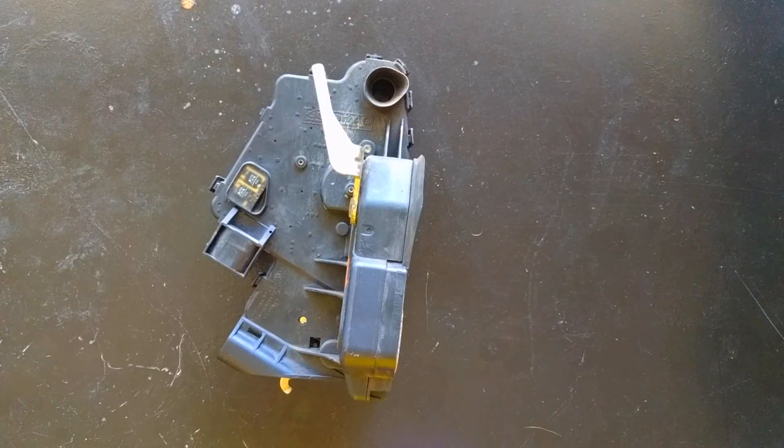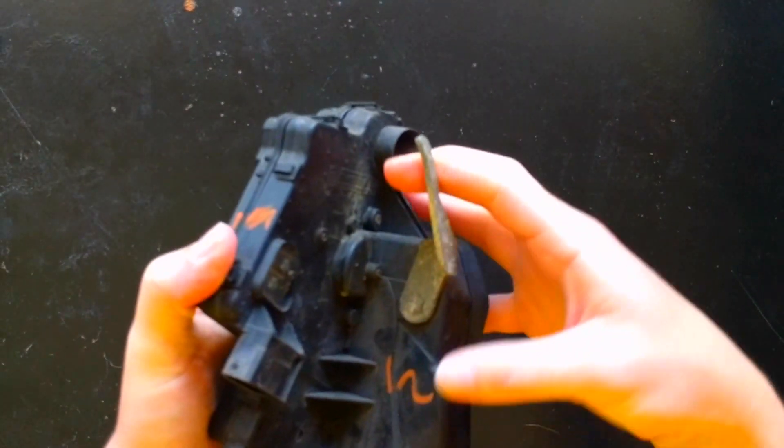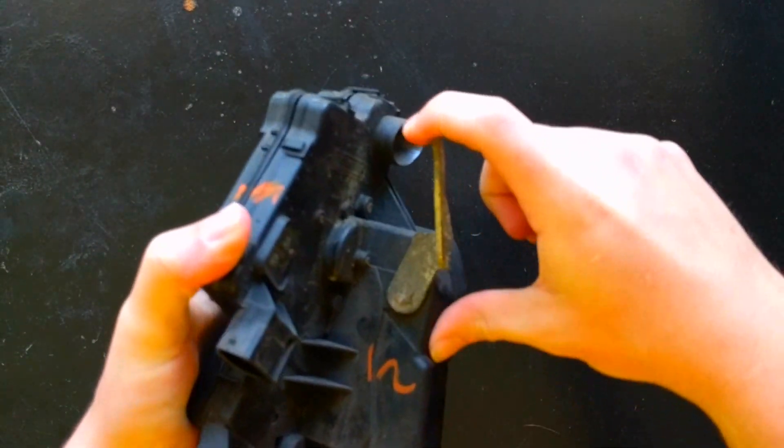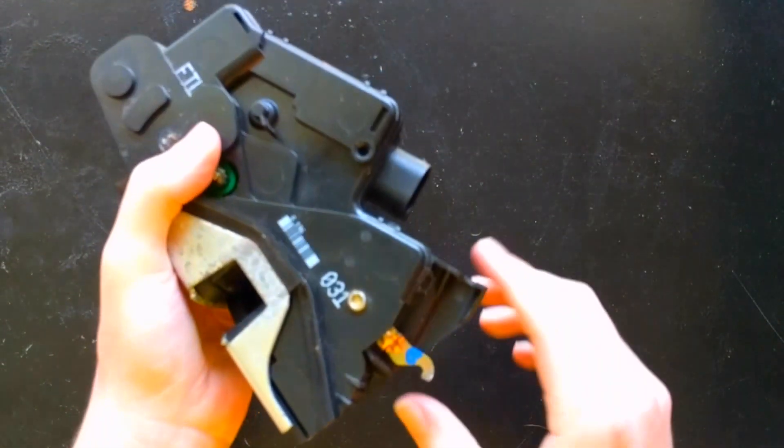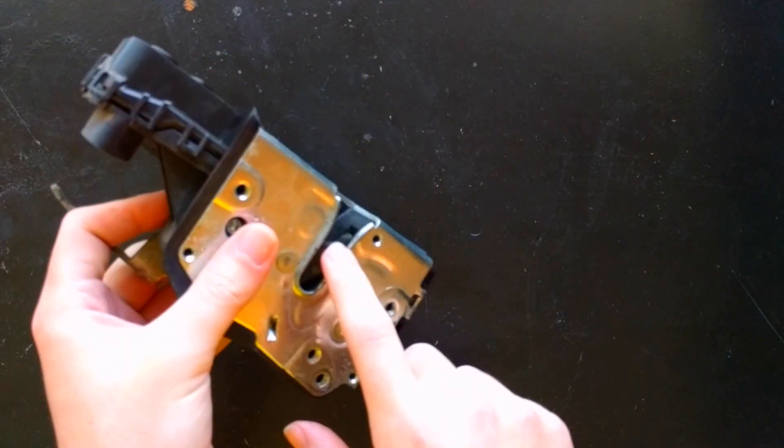This is an E46 lock actuator. There are a few key components. This here is the 99 style straight out handle. This is the exterior handle actuator. This down here is the interior handle actuator, door lock mechanism.